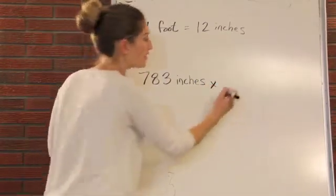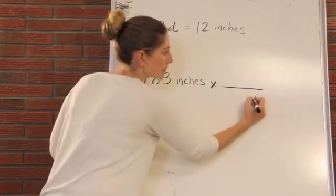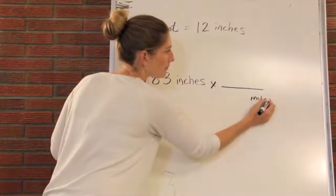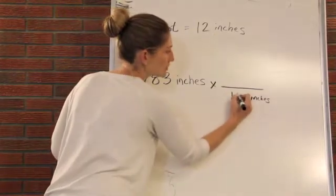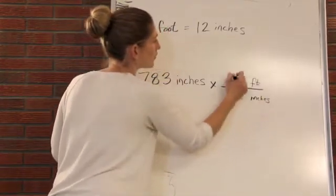So we multiply it by a fraction. Because we have inches, we're always going to put inches on the bottom. In this case, it's 12 inches. And then we're going to put the feet on top and one foot.